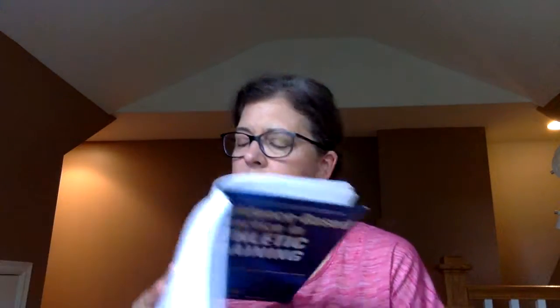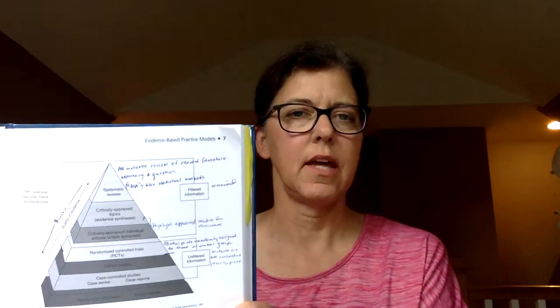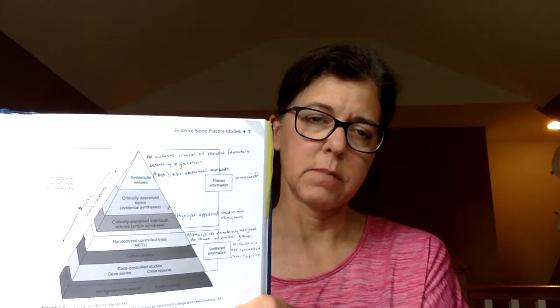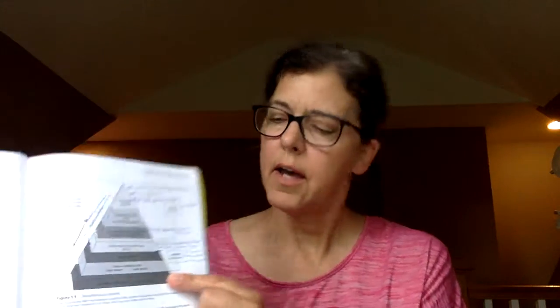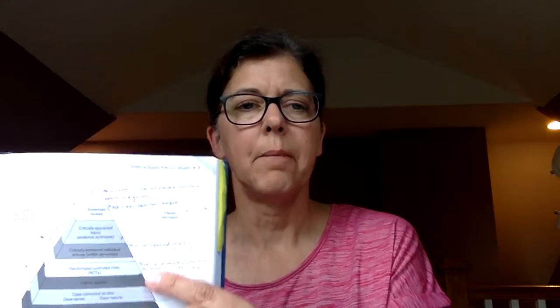So for Module 1, I just wanted to highlight a few things. On page 7, there is a picture in your book — it's a pyramid of hierarchy of articles. Articles categorized at the bottom of the pyramid are going to be easy to find, but they aren't very strong. As you work your way up the pyramid, articles at the top — like systematic reviews, meta-analyses, and clinically appraised topics — are tougher to find, but they're a higher quality of research article. We'll be referencing back to this in the future, so you may want to dog-ear that page.